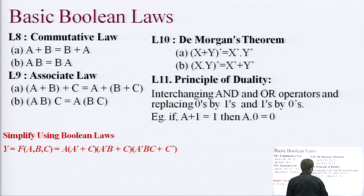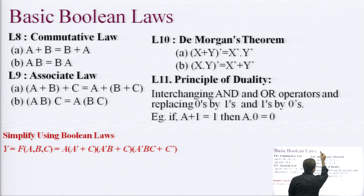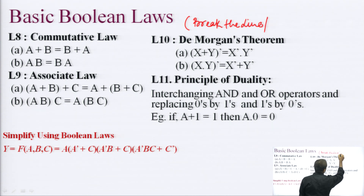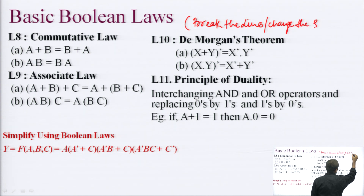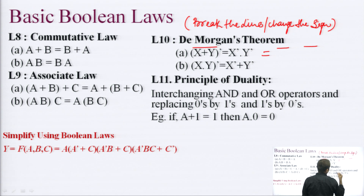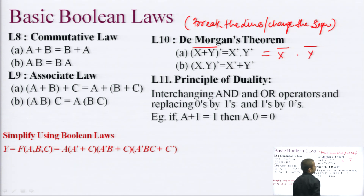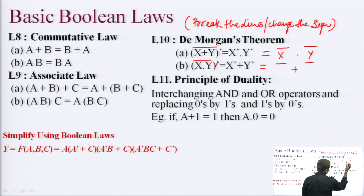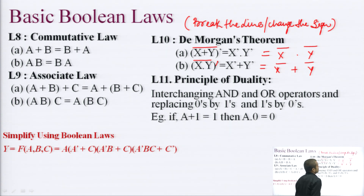De Morgan's theorem — a useful mnemonic is: break the line and change the sign. So (x plus y) whole complement equals x-complement dot y-complement. Similarly for the product version: (x dot y) whole complement equals x-complement plus y-complement. Breaking the line means removing the bar over the whole expression and applying individual bars, and changing the sign means changing dot to plus or plus to dot.